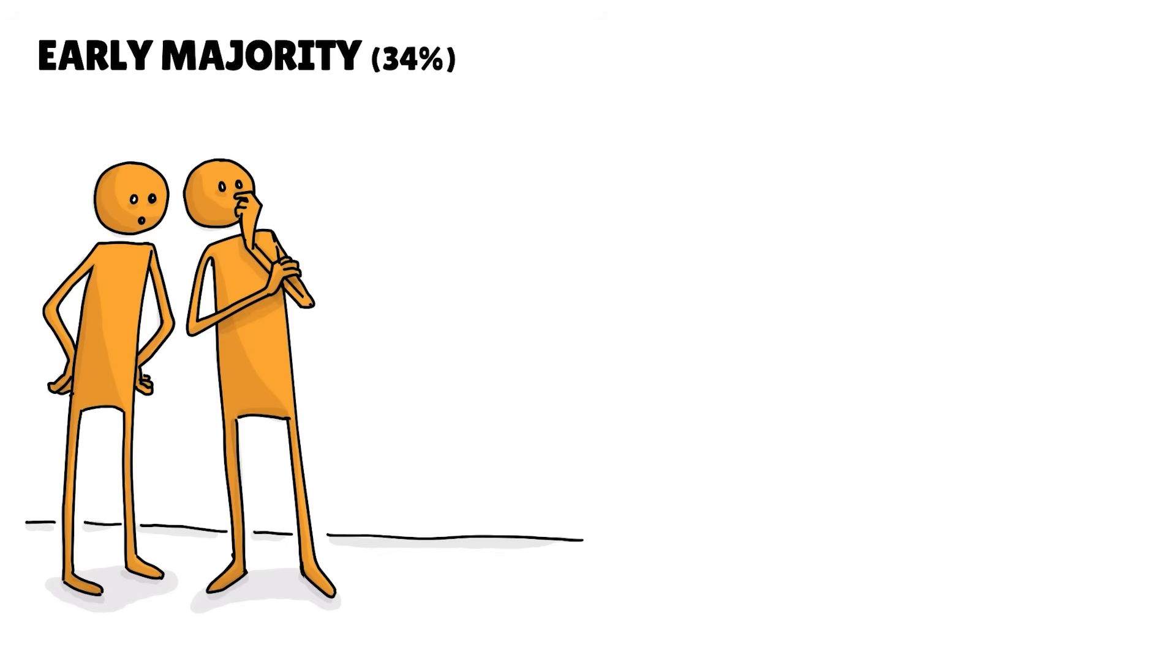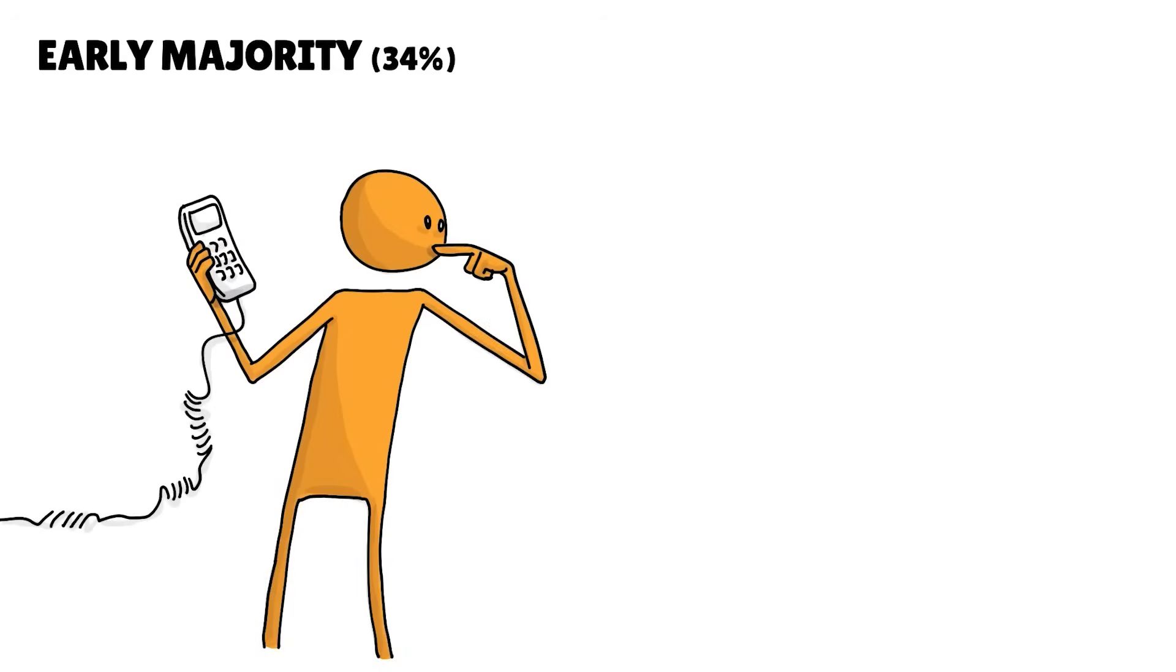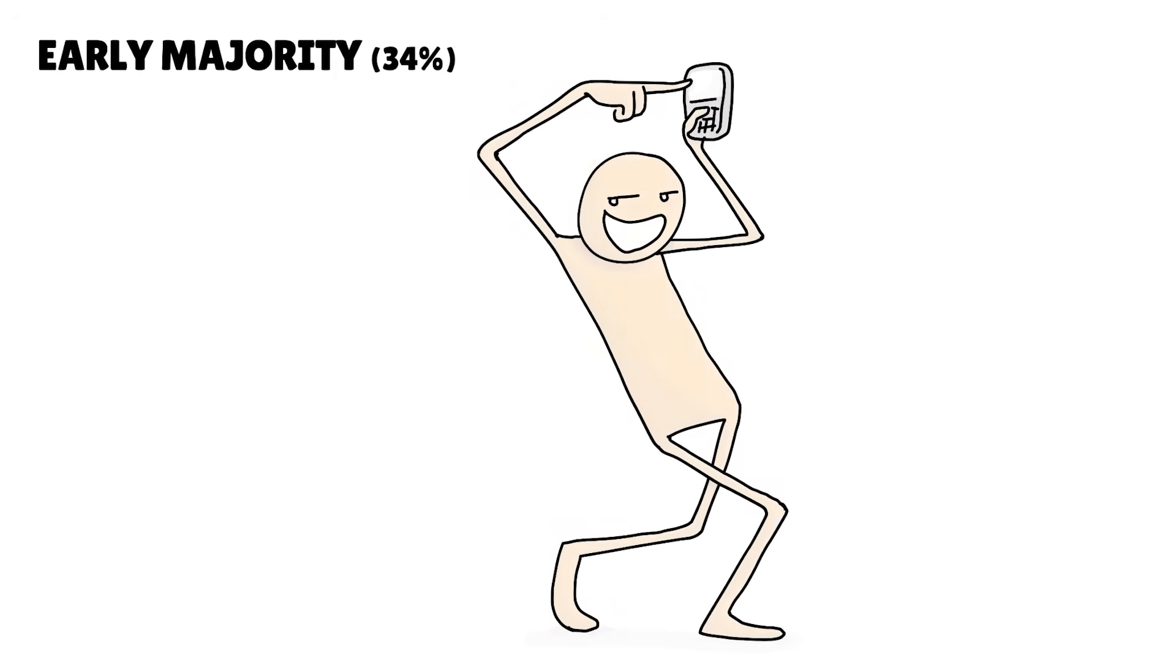People from the early majority wait until early adopters have paved the way. They're all about innovation but want to see real-world proof before making a move. Think of them as the ones who picked up $300 phones around the turn of the century.